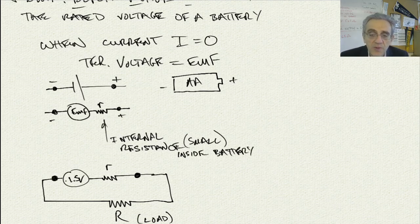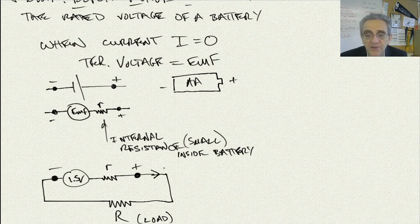So this internal resistance is inside the battery. Now when we connect the battery to the load, current flows. Okay. We're still going to say this is positive and this is negative. And the current is going to be flowing in this direction.